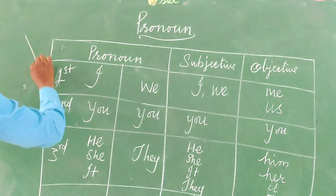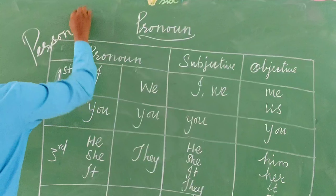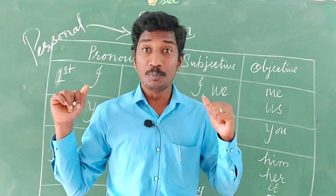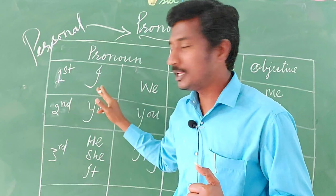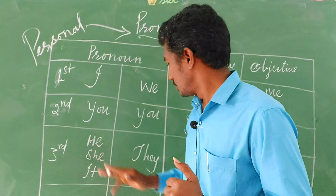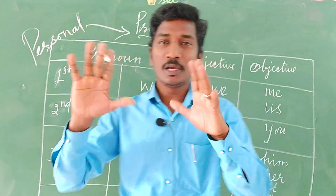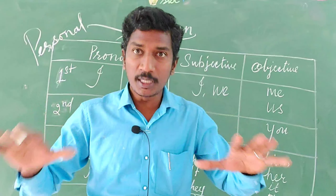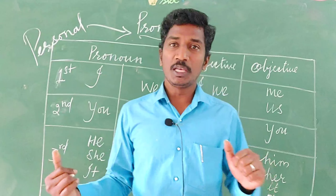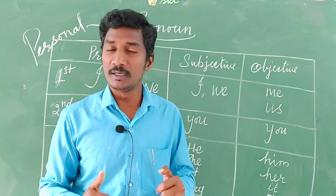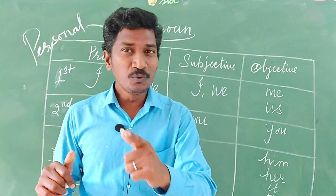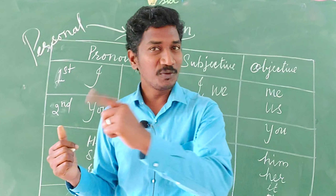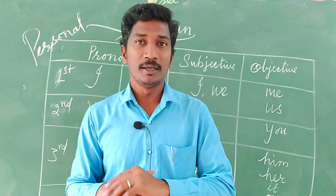These are all called personal pronouns. I, you, he, she, it, we, they — and their objective forms — are all called personal pronouns. We use them in the proper order for making sentences. Without these, making an English sentence is very difficult. I hope you understood. If you find any difficulty, please contact me and I will explain it once again in a different way. Thank you for watching.